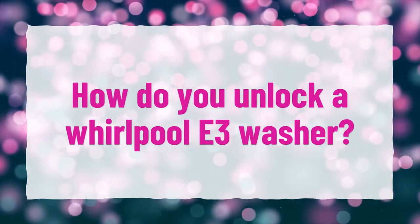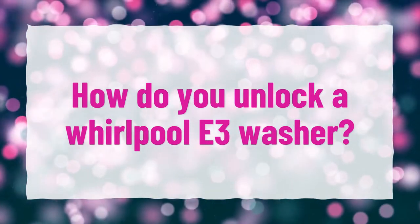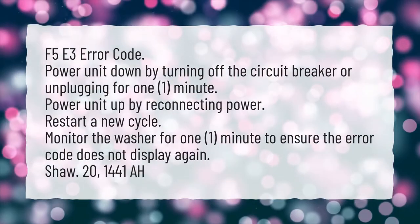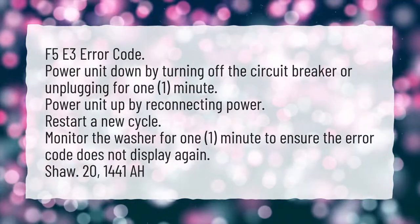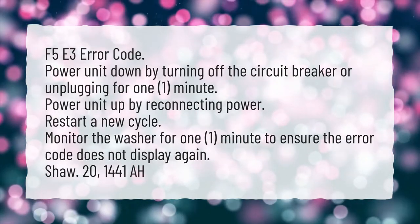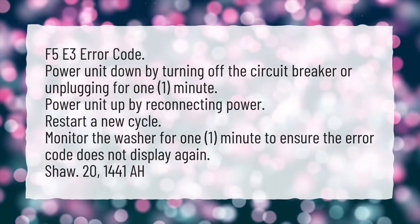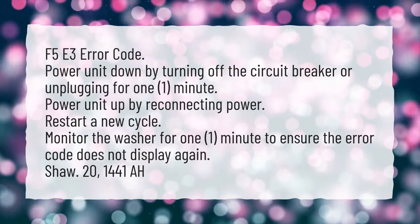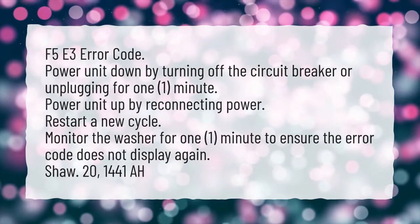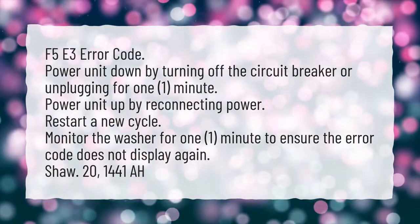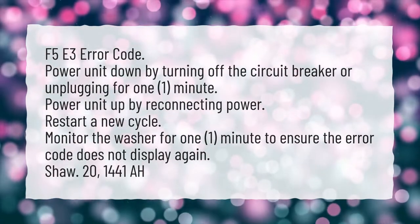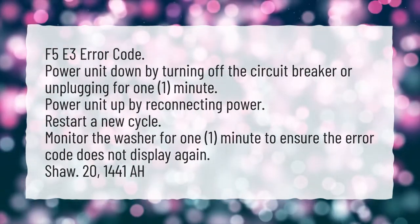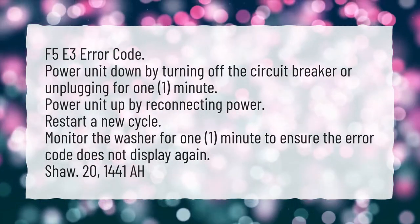How do you unlock a Whirlpool E3 washer? F5 E3 error code: Power the unit down by turning off the circuit breaker or unplugging for 1 minute. Power the unit up by reconnecting power. Restart a new cycle. Monitor the washer for 1 minute to ensure the error code does not display again.